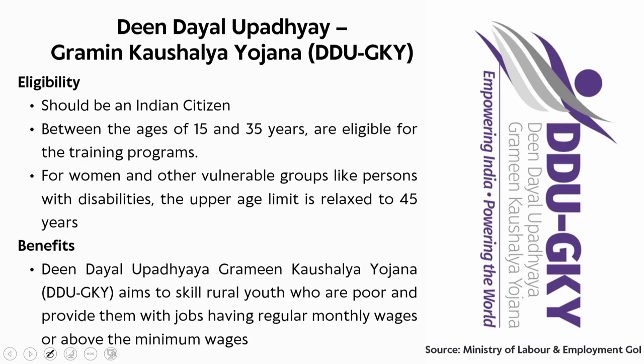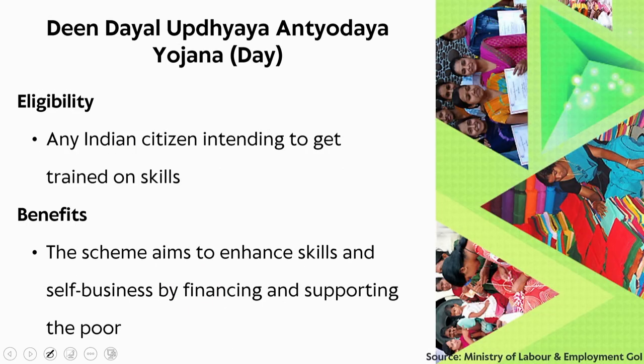The Deen Dayal Upadhyay Grameen Kaushal Yojana (DDU-GKY) is one of the most flagship programs for unemployment. Eligibility is Indian citizens between 15 and 35 years for training programs. For women and other vulnerable groups like persons with disabilities, the upper age limit is relaxed to 45 years. The scheme aims to skill rural youth who are poor and provide them with jobs having regular monthly wages at or above minimum wages, creating an ecosystem where youth are more skilled with greater employment possibilities.